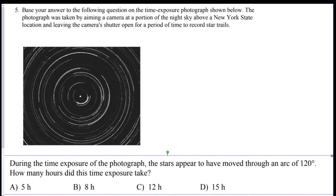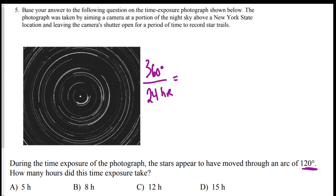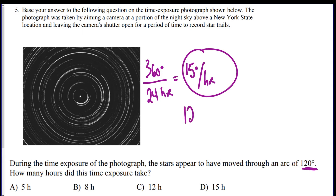Question five: during a time exposure photograph, the stars appeared to move through an arc of 120 degrees. How many hours did this take? The earth is 360 degrees and takes 24 hours to rotate once, so that's 15 degrees per hour — you have to know this number. 120 degrees divided by 15 degrees per hour gives you 8 hours.